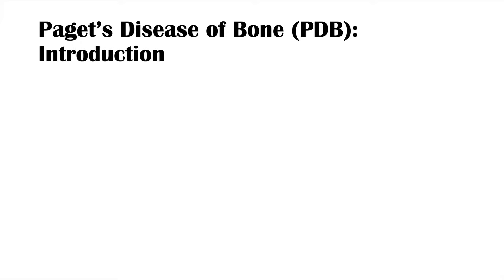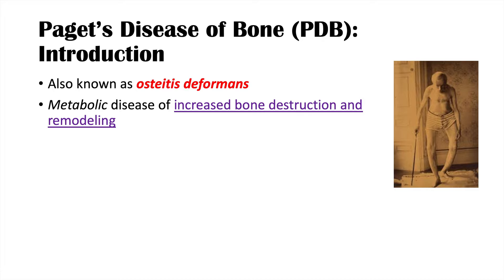Paget's disease of bone, or PDB, is also known as osteitis deformans. It is a metabolic disease that involves increased bone destruction and remodeling. Due to this increased turnover and destruction of bone, we can see skeletal deformities, and there are certain parts of the body that are affected more than others.